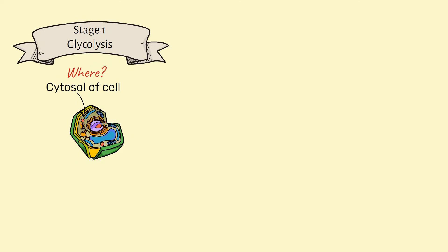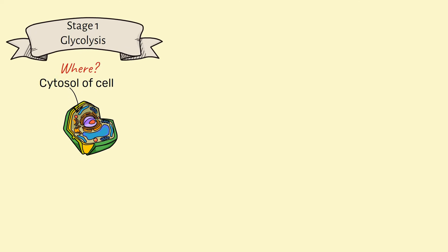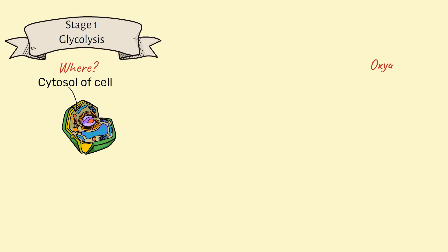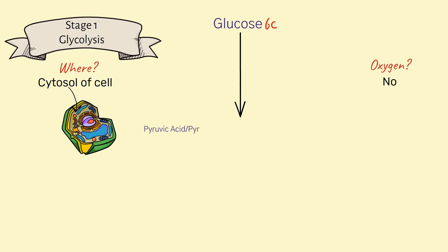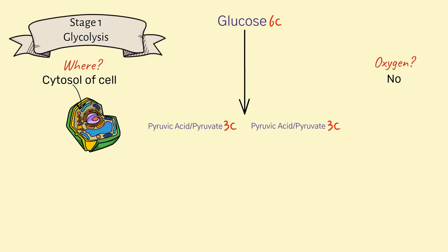Is oxygen involved in this stage? No — oxygen plays no role in glycolysis. We start with glucose, a six-carbon molecule, and at the end of glycolysis we have it split into two three-carbon molecules of pyruvic acid.